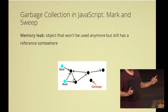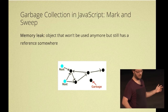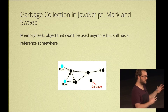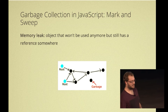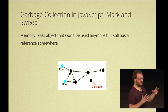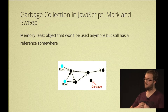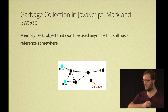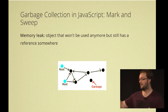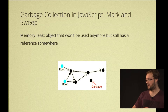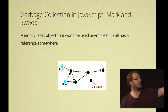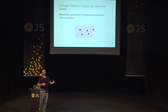First you need to know a little bit about how the Mark-Sweep algorithm works — that's the one used in most modern browsers. You have a set of objects called roots, and from the roots the garbage collector tries to find all the objects that are reachable. All objects that are not reachable, like the isolated one, are considered garbage and are collected.